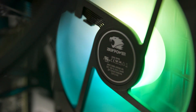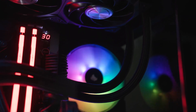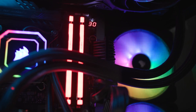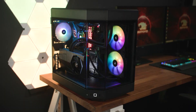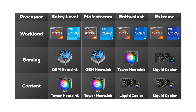Noise levels are also a concern. If you want a very quiet PC you're going to need to overbuild your system's cooling so the fans can run slower for the same cooling power. Here's a chart we've made as a general guideline for cooler selection, but we highly recommend looking up cooler recommendations for your specific processor, as heat output can vary wildly between generations and models.